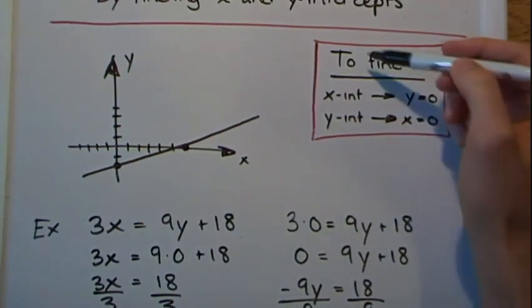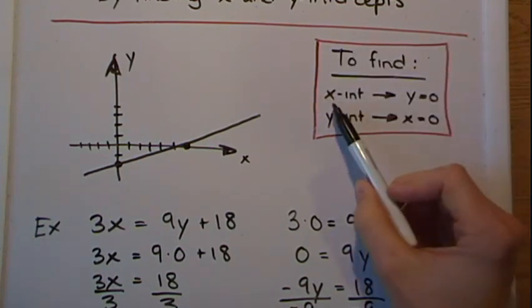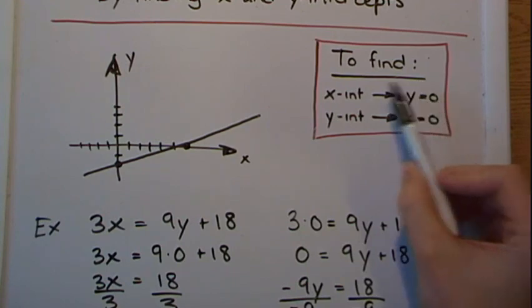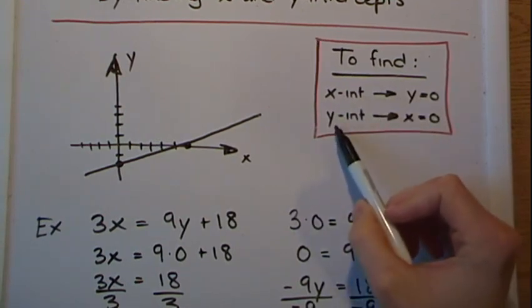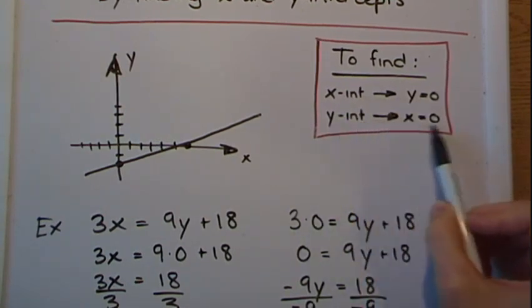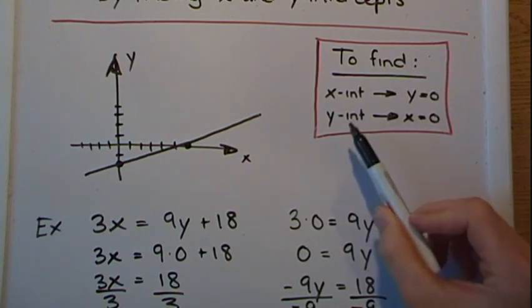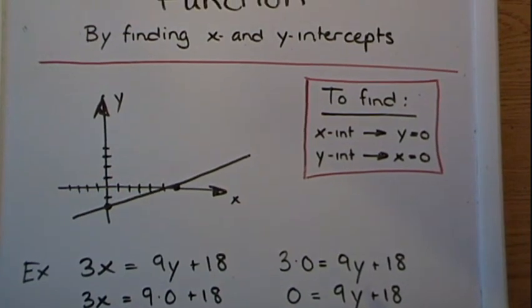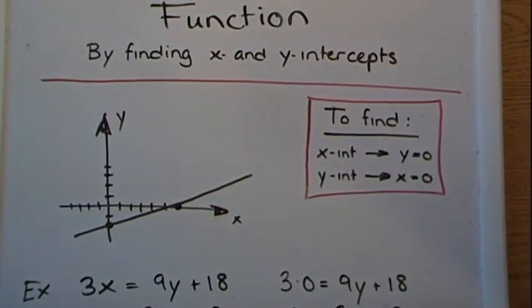So keep in mind this right here. To find the x intercept, you replace y by zero and solve for x. To find the y intercept, you replace x by zero and solve for y. Very useful principle and rule when trying to find x and y intercepts.